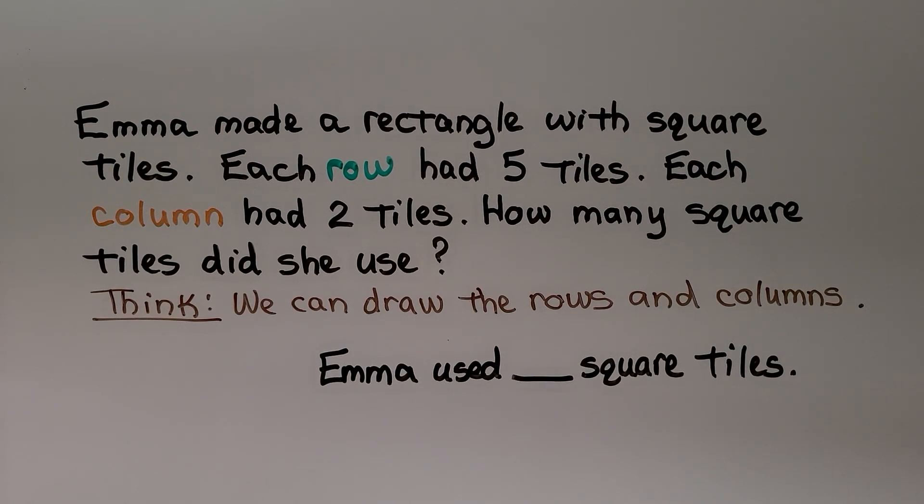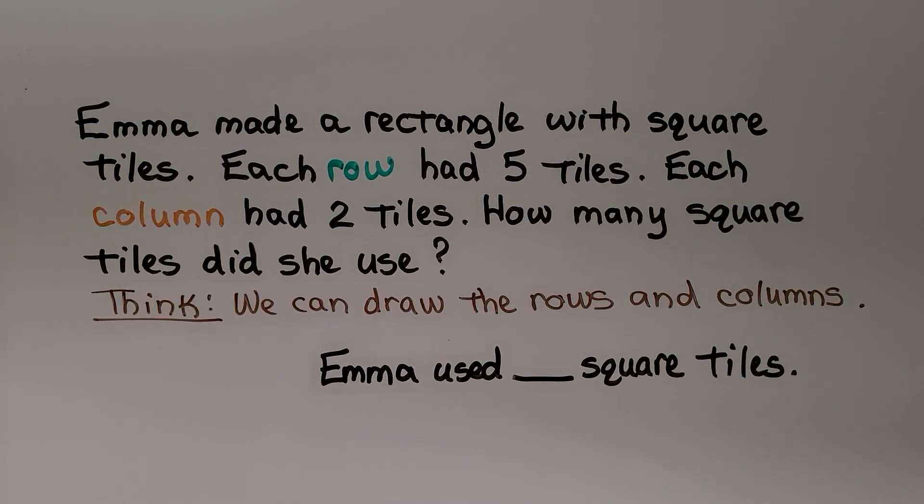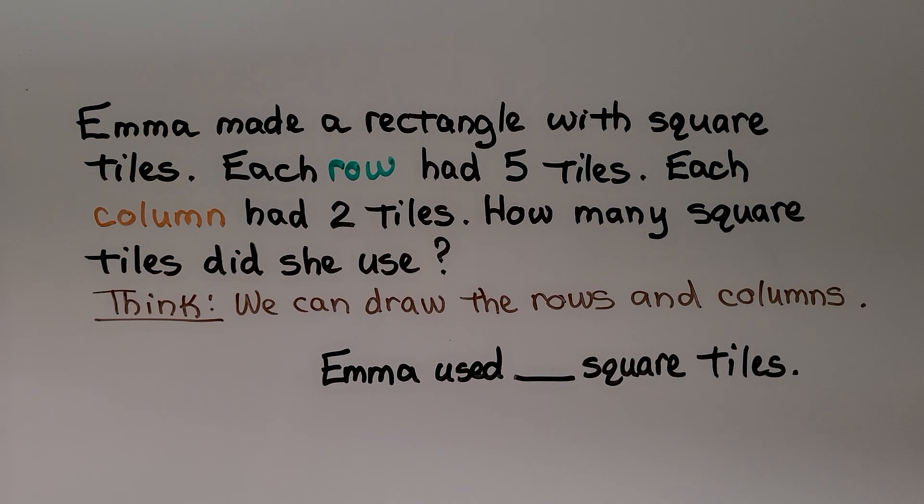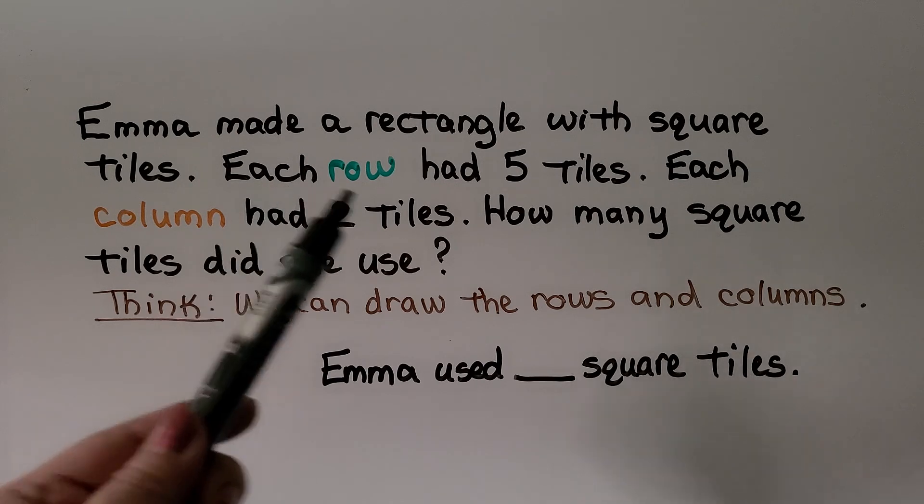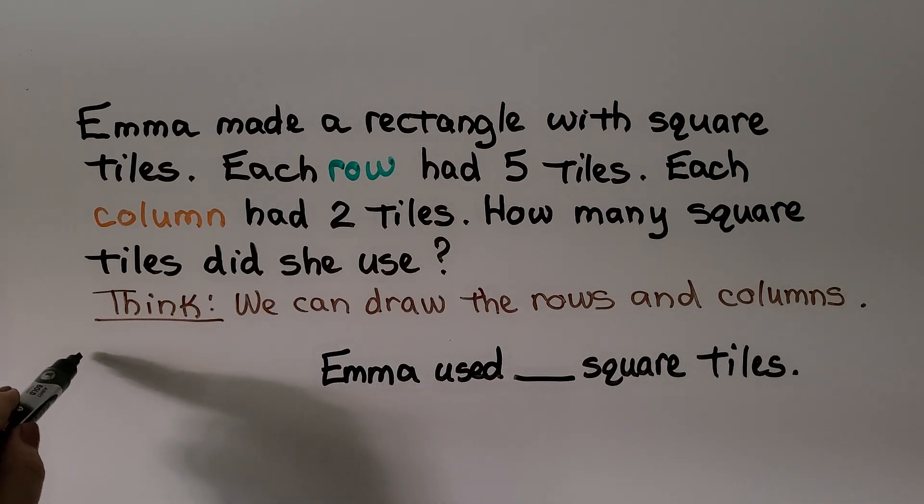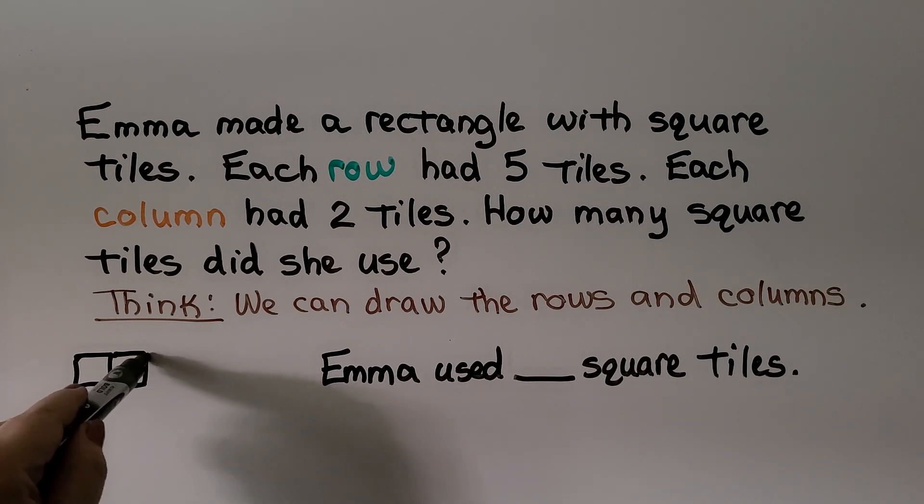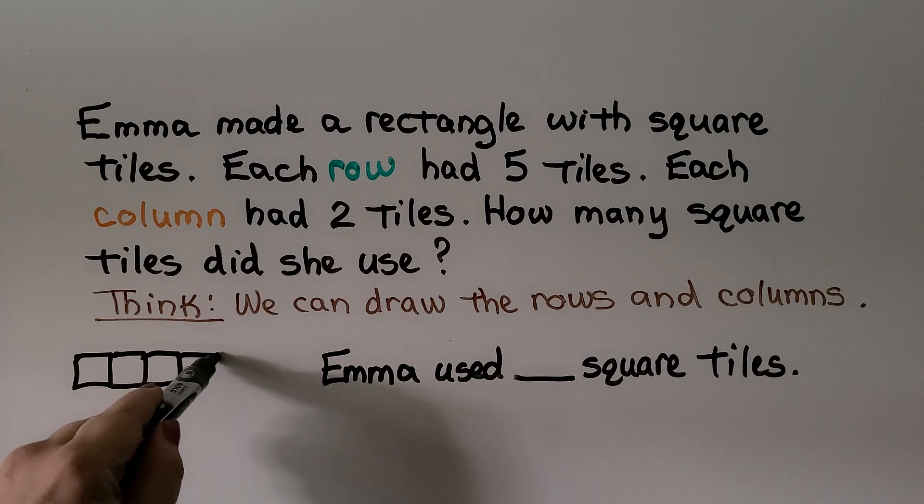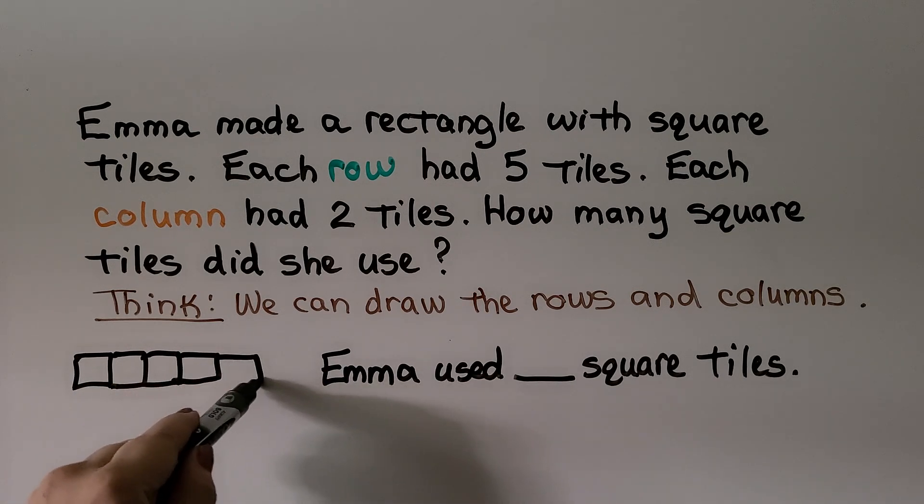Emma made a rectangle with square tiles. Each row had 5 tiles. Each column had 2 tiles. How many square tiles did she use? We think we can draw the rows and columns to help us. It says each row had 5 tiles. So we can make 1, 2, 3, 4, 5.